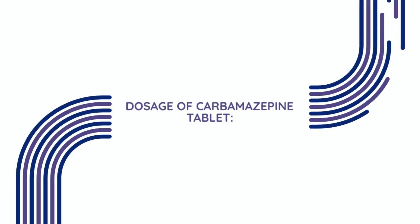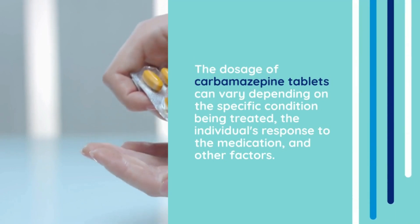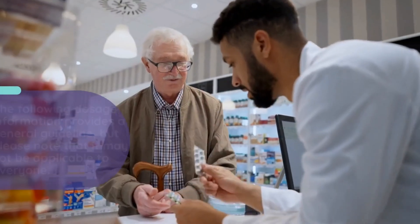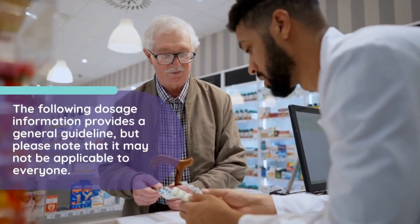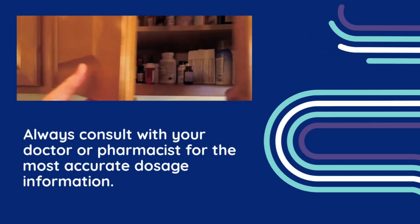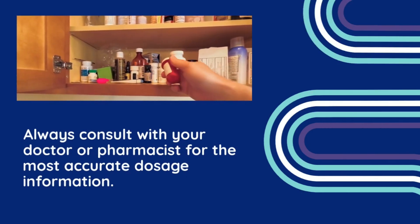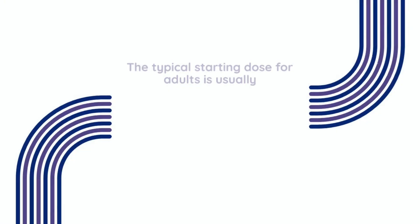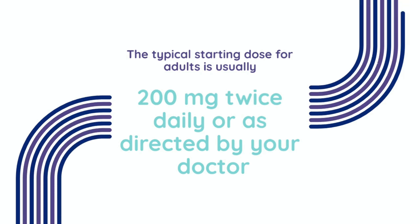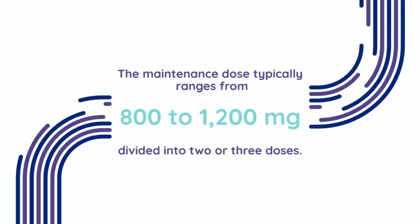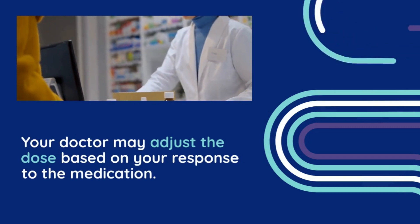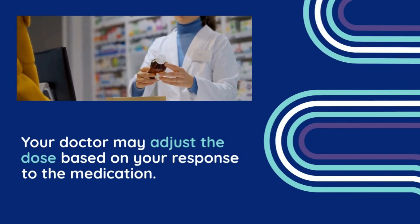Dosage of carbamazepine tablet. The dosage can vary depending on the specific condition being treated, the individual's response to the medication, and other factors. The following dosage information provides a general guideline. Always consult with your doctor or pharmacist for the most accurate dosage information. In epilepsy, the typical starting dose for adults is usually 200 mg twice daily. The maintenance dose typically ranges from 800 to 1,200 mg per day, divided into two or three doses. Your doctor may adjust the dose based on your response.